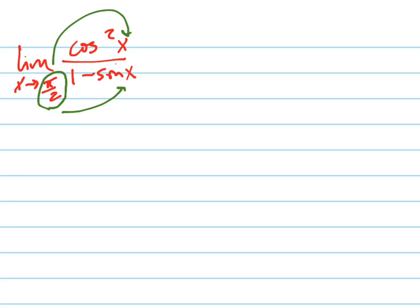But if I did that, I would get 0 over 0, which means that I don't really know what the limit is yet. So I can't do that. I can't just plug it in. And my next instinct is to say, look, that looks like something I'd want to get rid of by multiplying by the conjugate of it.